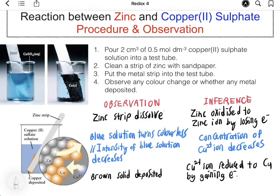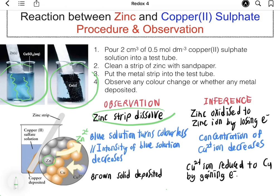Now we will discuss the reaction between zinc and copper sulfate solution. A zinc strip is dipped into copper sulfate solution and we observe any color change or whether any metal is deposited. First, we will observe that the zinc strip will dissolve. This is because zinc is oxidized so that zinc becomes Zn²⁺ ions in the solution. We will also notice that the intensity of the blue solution decreases due to the decrease in concentration of Cu²⁺ ions.